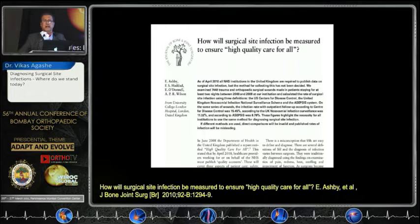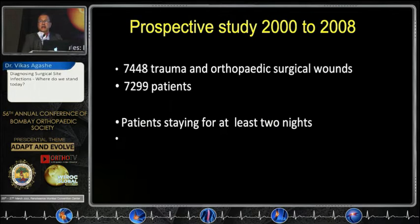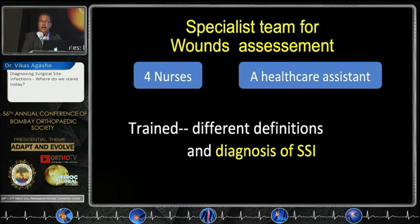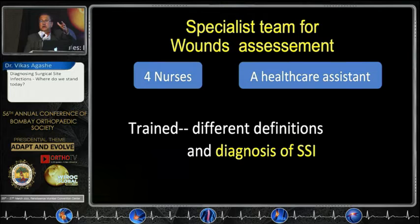A major publication came in 2010 asking: how should surgical site infection be measured? This was a huge, 8-year prospective study of more than 7,000 patients in a British university hospital. Surgical site infections were classified using all three definitions to find out whether the results were similar and whether they could serve as a threshold for initiating appropriate treatment.